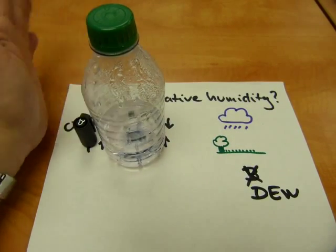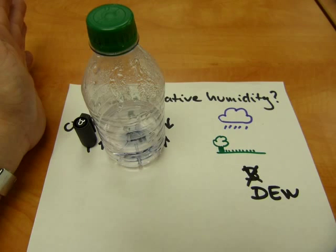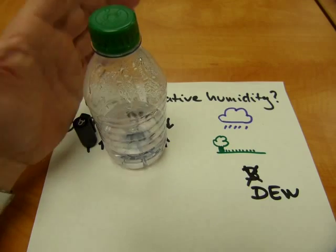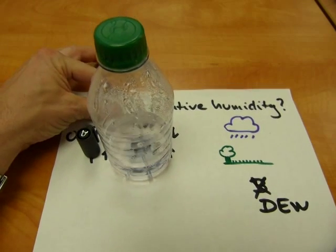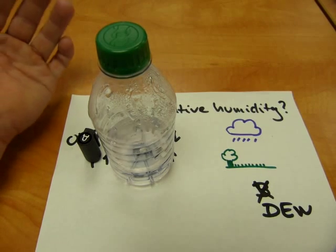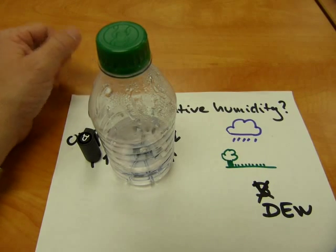Dew point doesn't have anything to do with cold, or not necessarily. This is the middle of summer, and you can see these droplets beautifully forming. However, it does form in the morning. Dew forms typically in the morning, and then the sun dries it up.